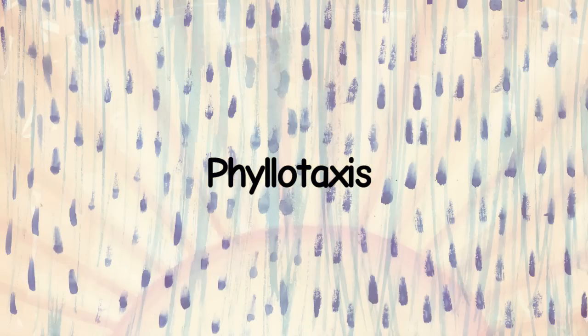The study of arrangement of leaves on a plant stem is called phyllotaxis. In order to survive, plants need sunlight and rain that comes directly from the sky above.